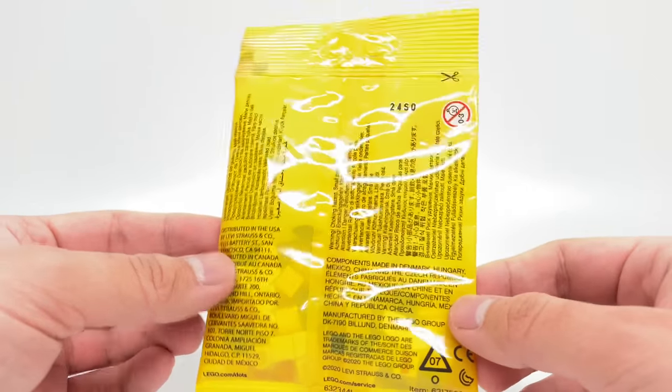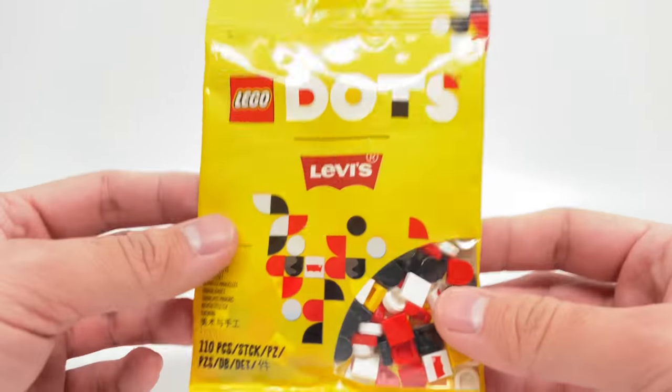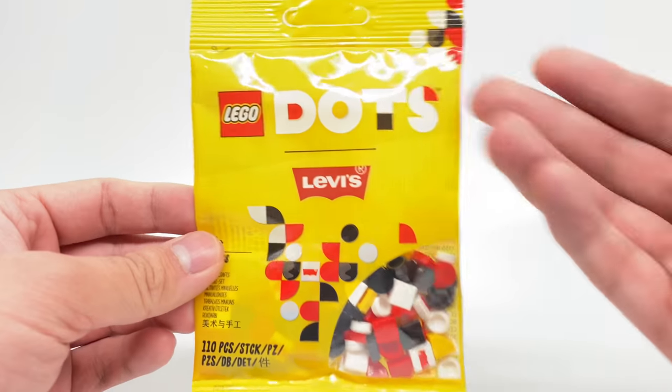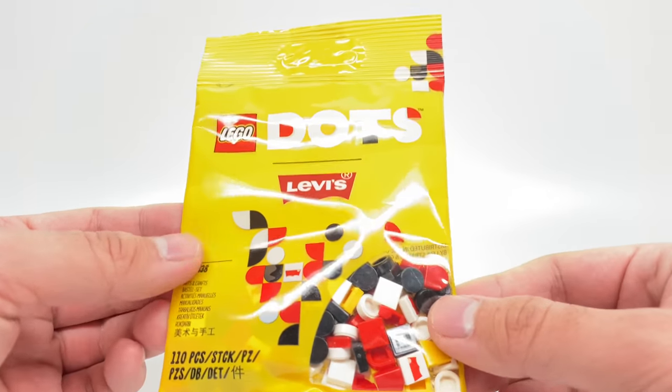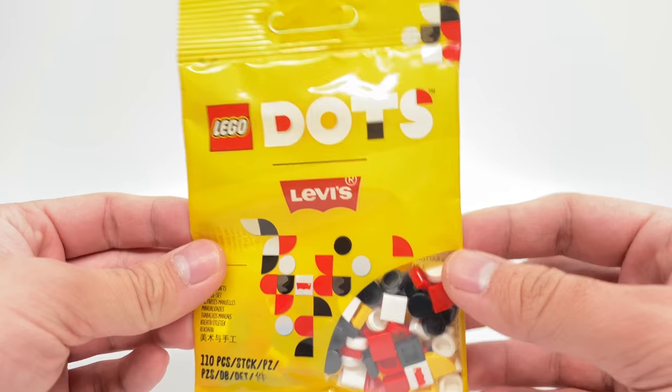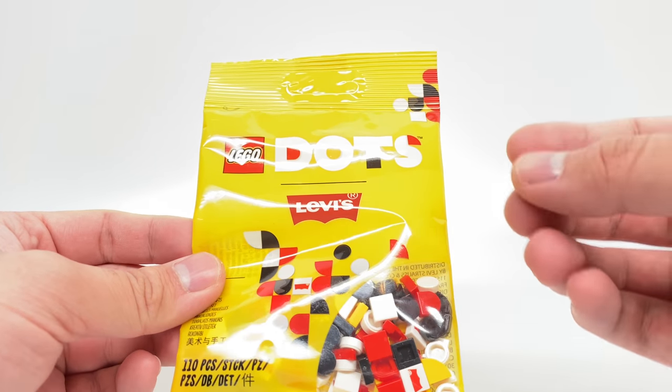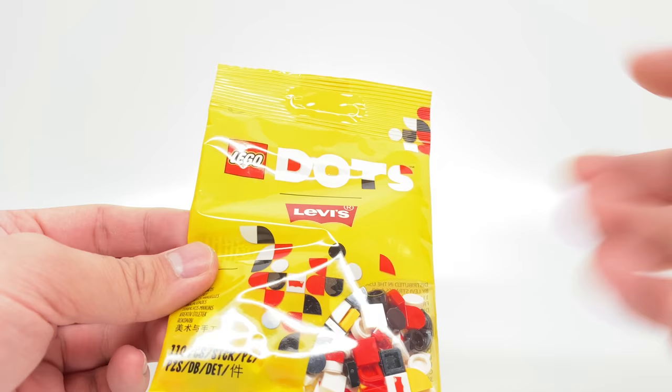Now, this is a very strange promotional set that was included as a bonus with specific Levi's products. You see, LEGO and Levi's collaborated recently and released a whole clothing line, and the products you could find these on are the jeans and the jackets, which are $80 to like $120, $130.